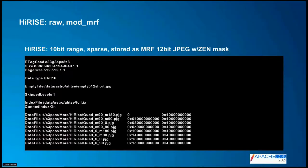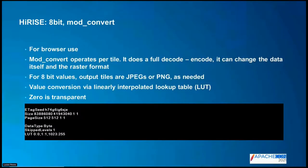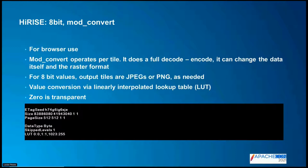For browser use, 10-bit JPEGs can't be used because browsers don't support them. So you need to convert and scale it down to 8-bit using mod_convert, which works per-tile — it takes a single input tile, does a full decode and encode, operates on the pixel matrix, and can change the data type and raster format. The input can be JPEG and the output PNG, or vice versa. By default, output tiles are JPEG if there's no transparency, or PNG if there is — what most browsers support.